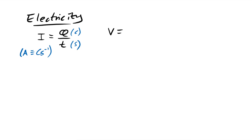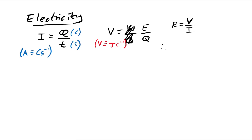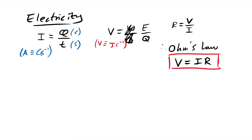Voltage or PD is energy per unit charge: V = E/Q (joules per coulomb). Volts are the same thing as joules per coulomb — how many joules does each coulomb of charge gain or lose passing through something? Ohm's law is V = IR, and essentially all of electricity comes down to this one equation. If you're stuck, you'll need V = IR, but the challenge is finding the two knowns.